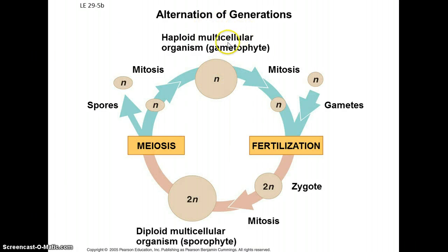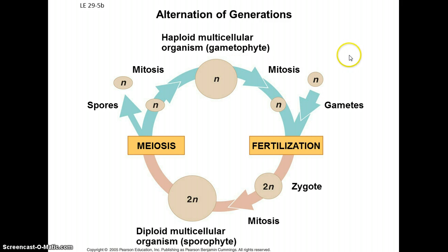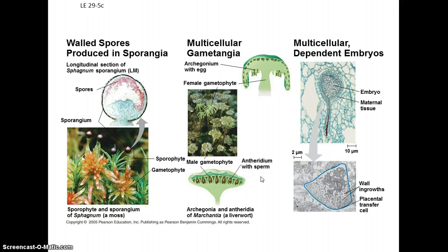Plants have alternation of generations, which is when an organism has a multicellular haploid stage known as the gametophyte, and a multicellular diploid stage known as the sporophyte. The job of the sporophyte is to produce spores, which are haploid, and go through mitotic events to produce the multicellular gametophyte. The job of the gametophyte is to produce gametes; gametes from different gametophytes get together through fertilization to produce the diploid sporophyte of the next generation. Plants also have sporangia — structures whose job is to produce spores — gametangia, structures that produce gametes, and embryos that grow on and are dependent upon the parent plant.